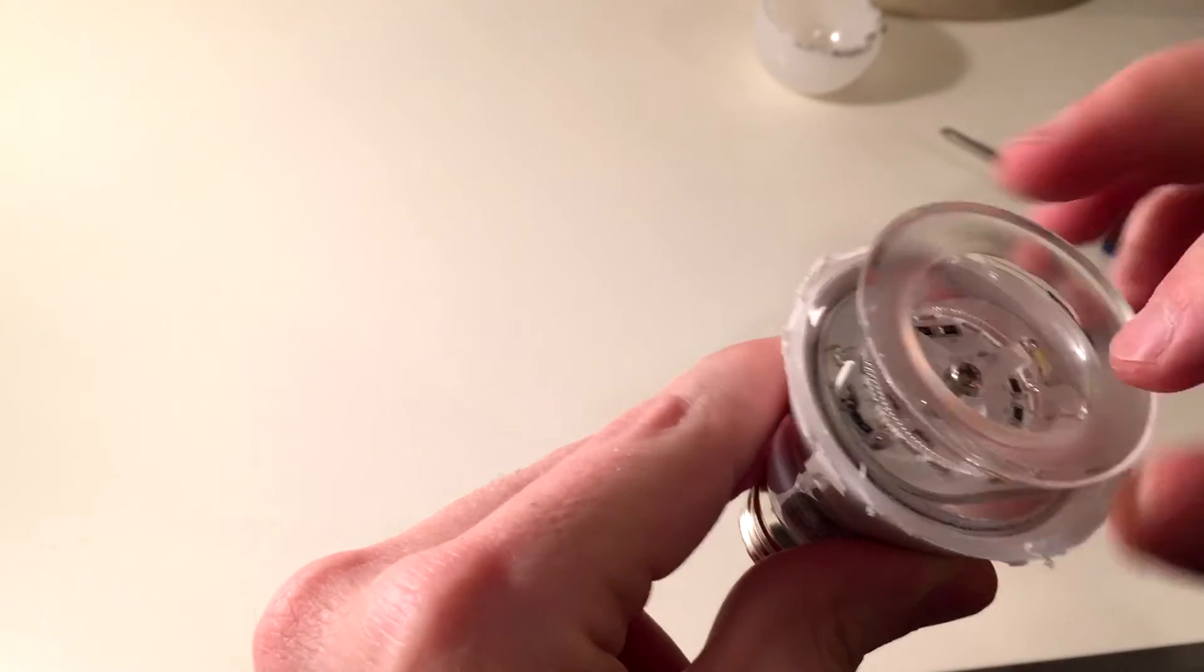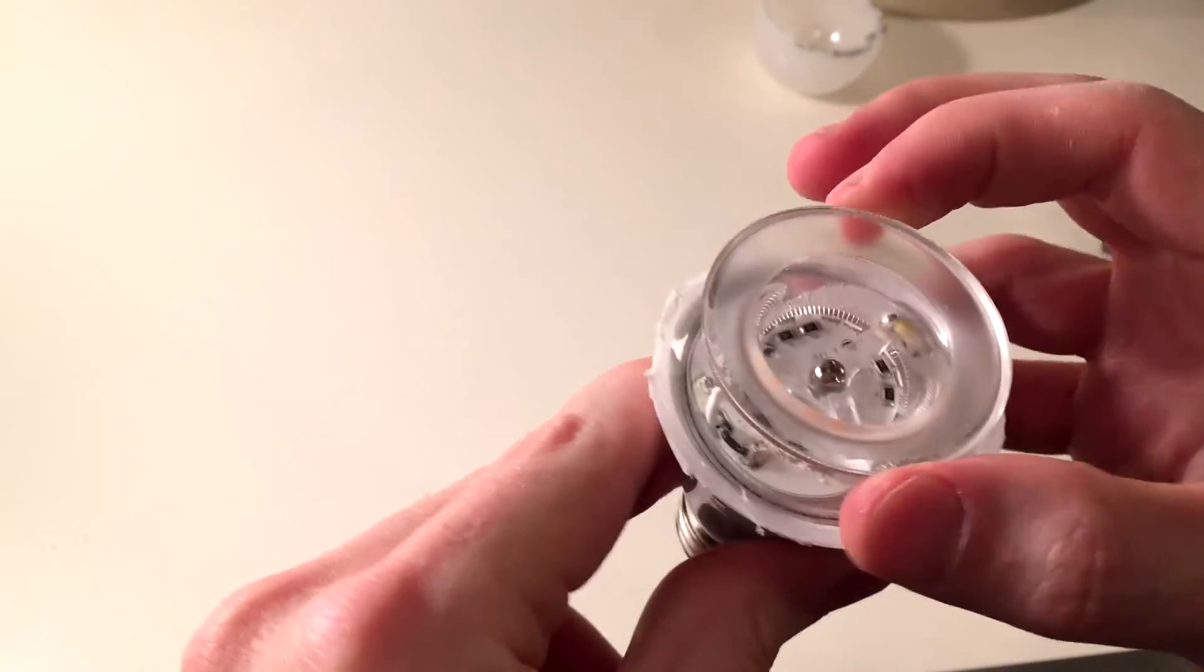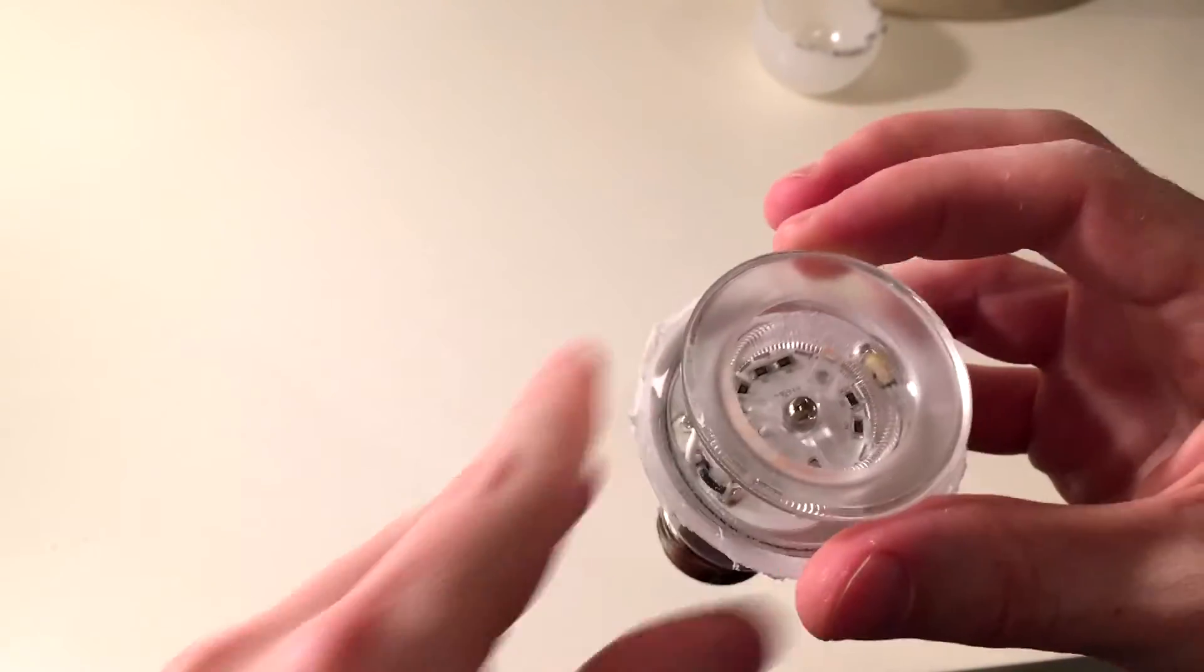There's a ring of LEDs and then there's this diffuser here. So let's take off this diffuser so we can get a better look at the LEDs.